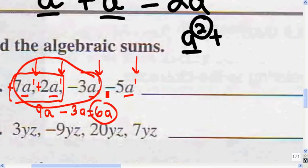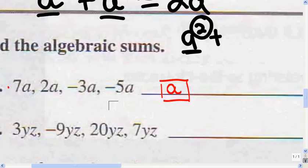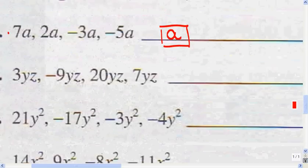I still have a negative 5a, so I'm going to take away 5a from the 6a. 6a minus 5a is just a. That's my answer. You could really do it all in your head: 7a plus 2a is 9a, minus 3a is 6a, minus 5a is just a.